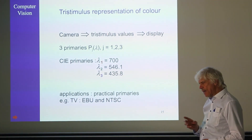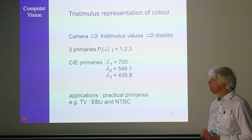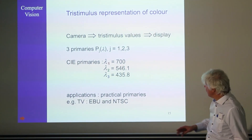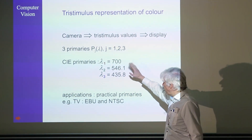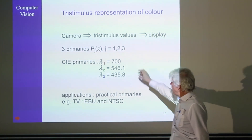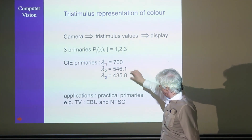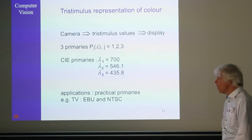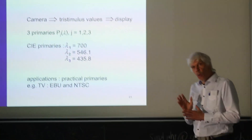These three CIE primaries are monochromatic light sources with wavelengths of 700 nm, 550 nm, and a shorter one. So basically we have a red primary, a green primary, and a blue primary — all monochromatic, meaning they each have only a single wavelength.